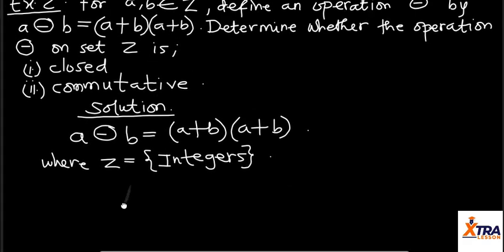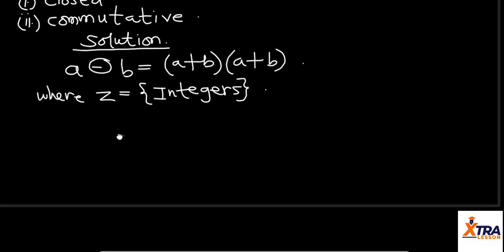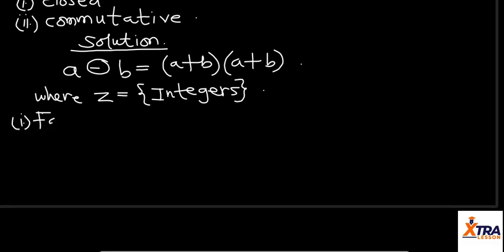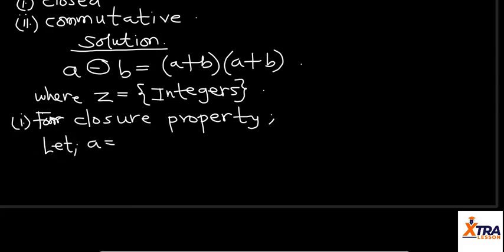So if set Z is for integers, then I can say for closure property, let A equals 3 and B equals 4.